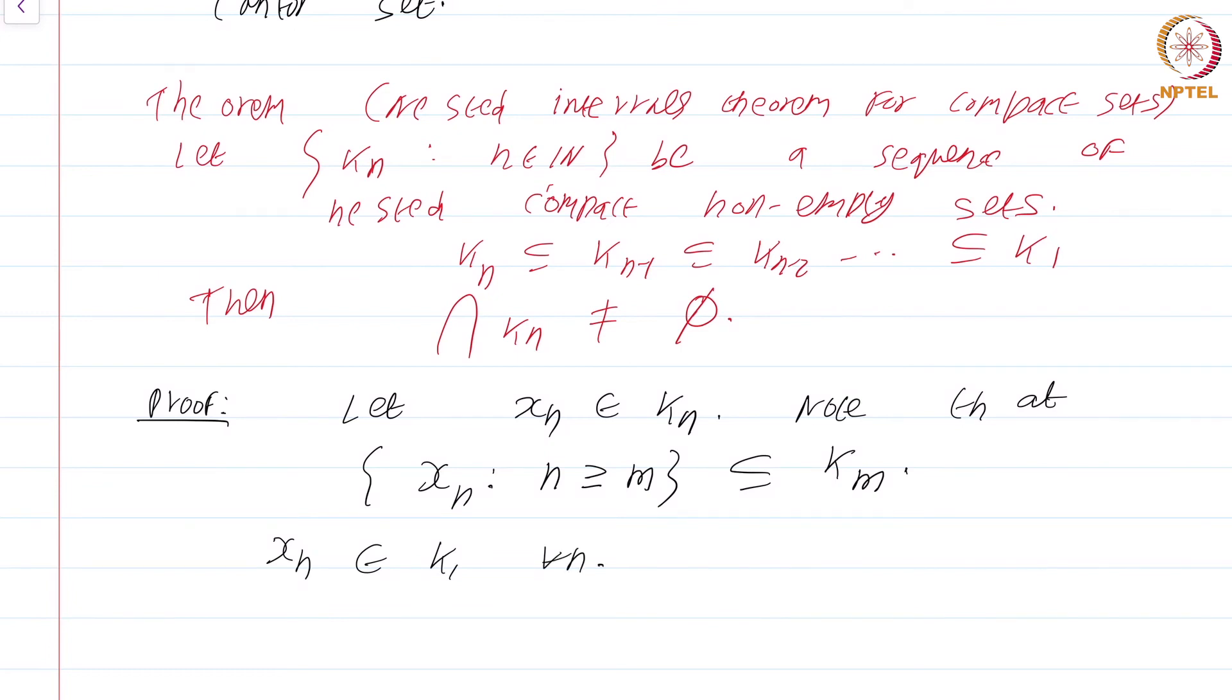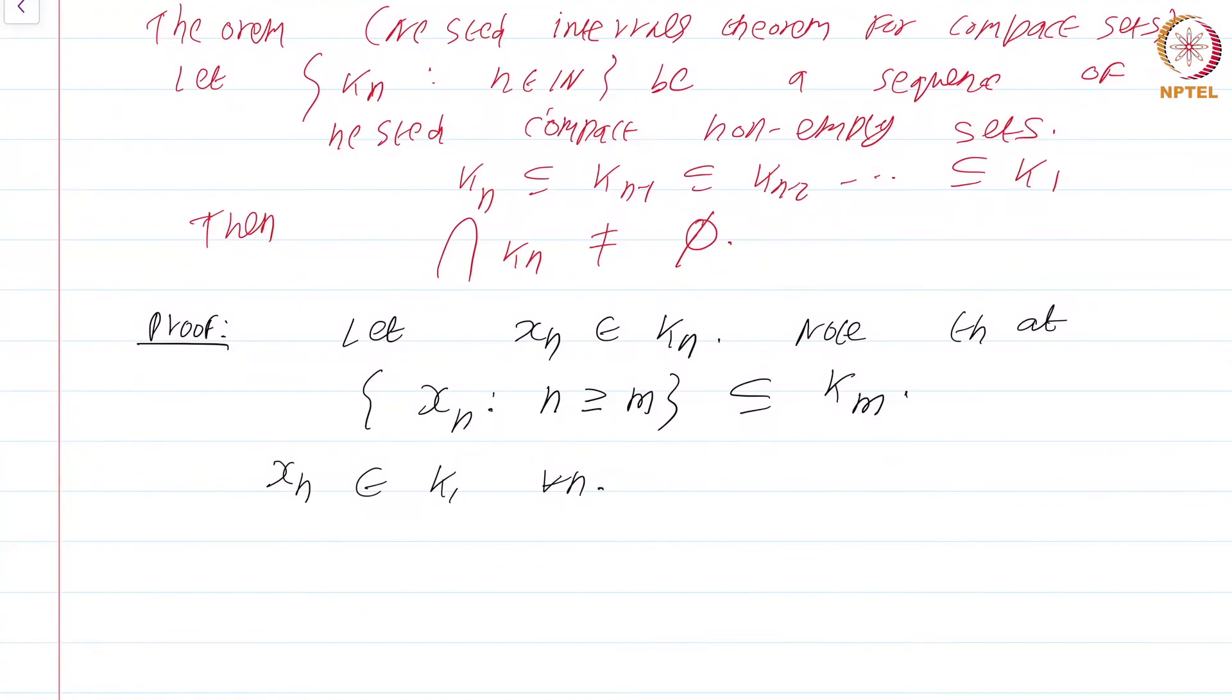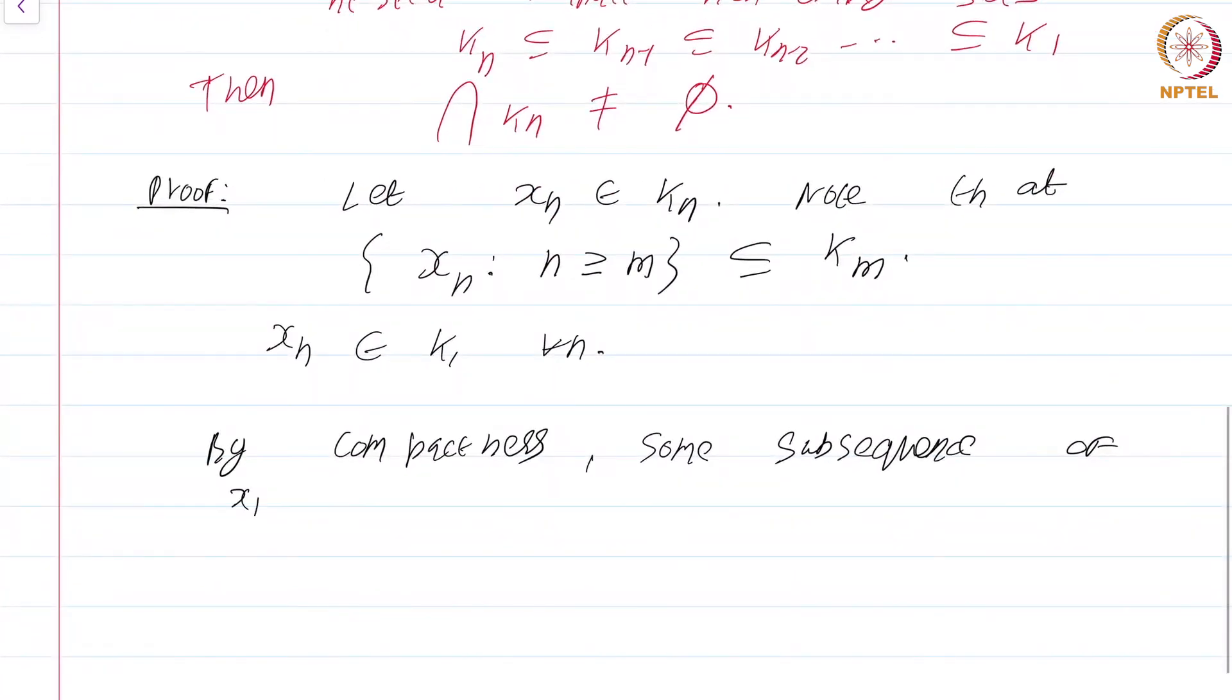So all the terms of this sequence beyond the mth term will be a subset of k_m. Now, by compactness, some subsequence of x_n converges to x in k_1.